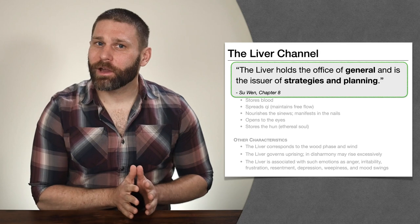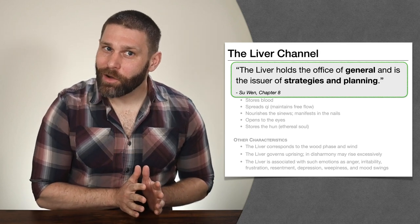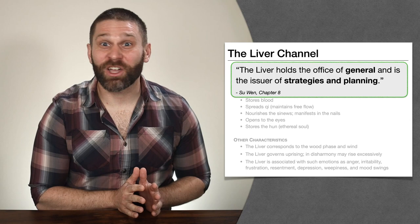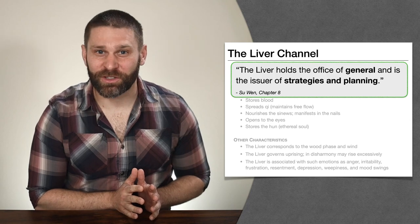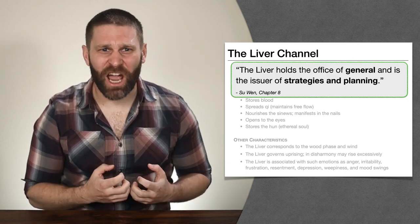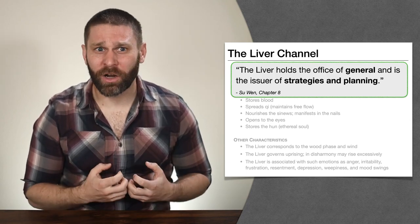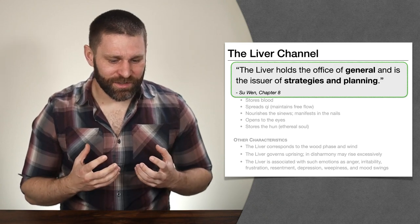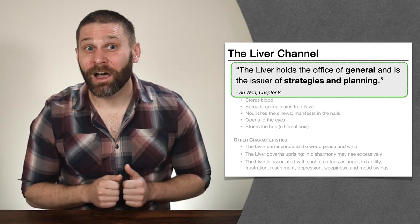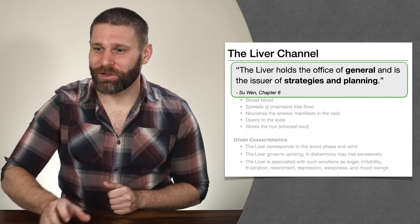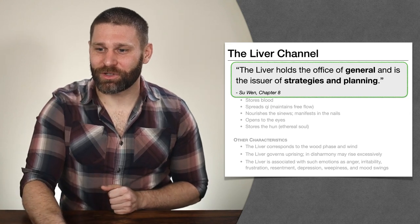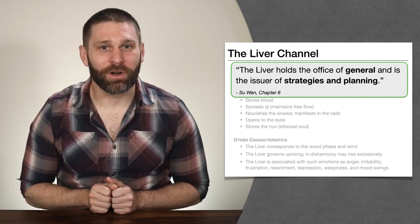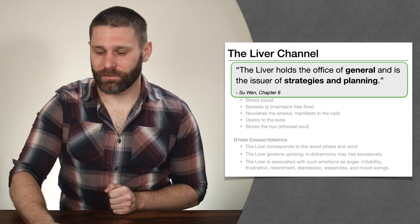On the other hand, if our liver is a little bit out of order, maybe a better picture would be like a drill sergeant — someone who's angry, shouting, barking orders, and not so much in control, but always angry and shouting. That's a little bit more of a disharmonious liver.